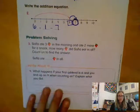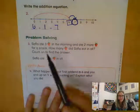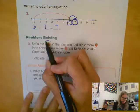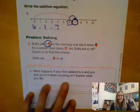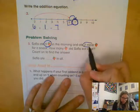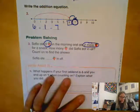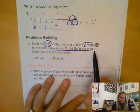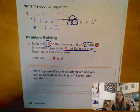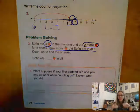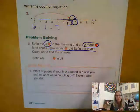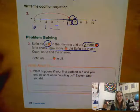Taking a look at our word problem here, it says Sophia ate three strawberries in the morning. So go ahead and circle three strawberries and ate two more for a snack. So now you can circle two more strawberries. How many strawberries did Sophia eat in all? So that is what we're trying to figure out. We want the total amount of strawberries. So it says count on to find the answer.